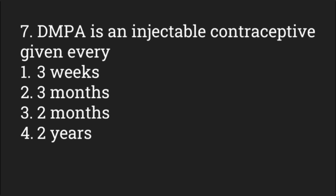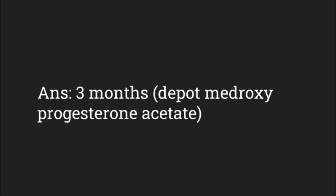DMPA is an injectable contraceptive given every — options: three weeks, three months, two months, two years. It is given every three months. DMPA stands for depot medroxyprogesterone acetate.